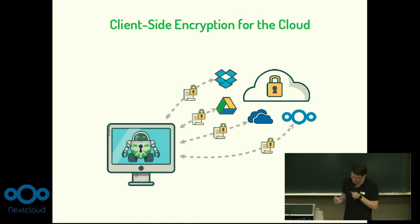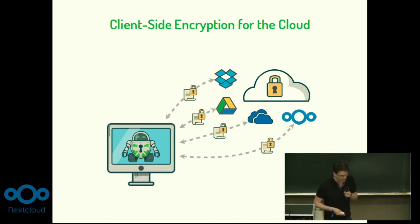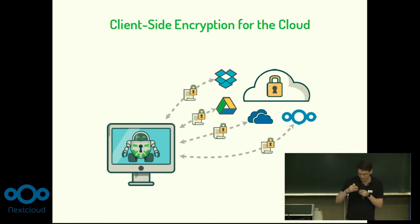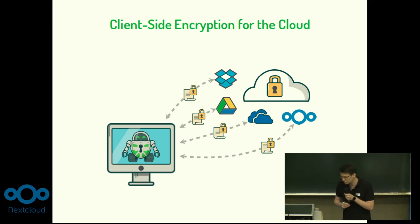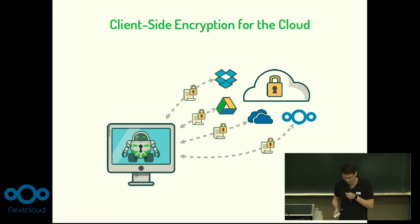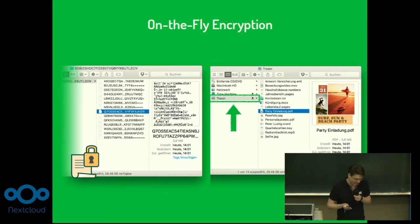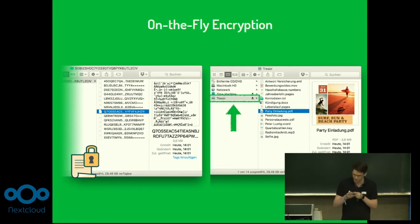Cryptometer is a client-side encryption solution for cloud files. That means your files are encrypted on your device before they are uploaded to the cloud, so that your Nextcloud server only sees encrypted data. With Cryptometer, you create a vault and assign a password, and that's all you have to do to set up.